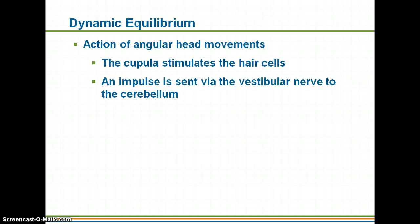Before moving on to hearing, with dynamic equilibrium — which looks at angular head movement — this is one of the reasons why people get car sick. When you're riding in a vehicle, you still have movement of the endolymph within your inner ear. However, if you're reading a book or staring at the back of a seat, your eyes send a message to your brain that you are still, while the endolymph within your dynamic equilibrium receptors tells your brain that you're moving. This mixture of confused signals can lead to a feeling of nausea and getting sick.